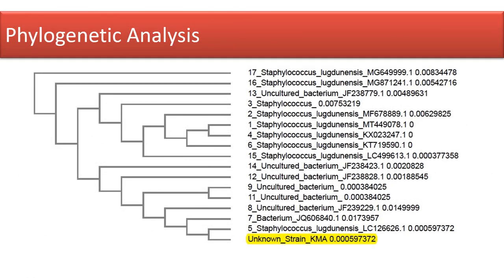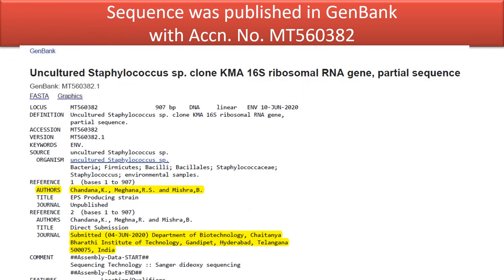With the obtained rRNA sequence, we constructed a phylogenetic tree using multiple sequence analysis of other strains, which showed 90 to 100% similarity. Here is the information about the sequence published. Our strain was accepted as a new one with accession number MT560382.